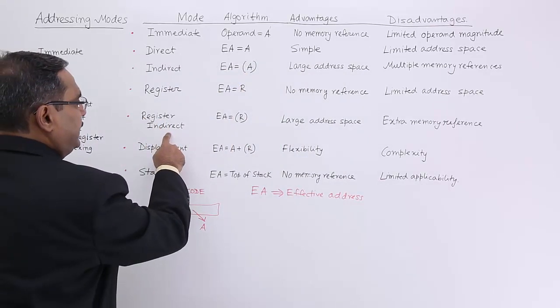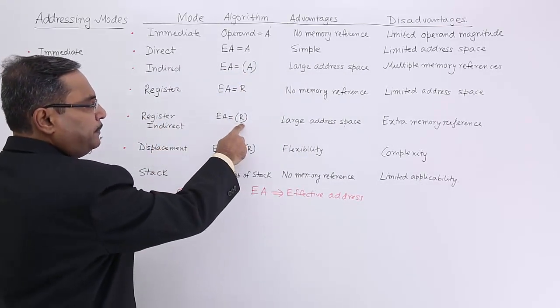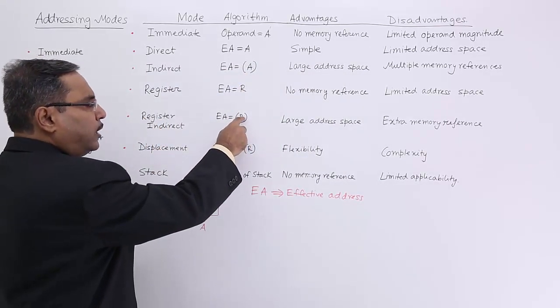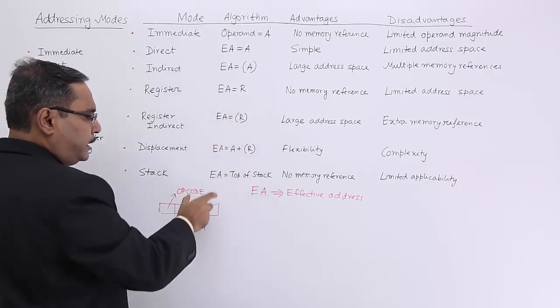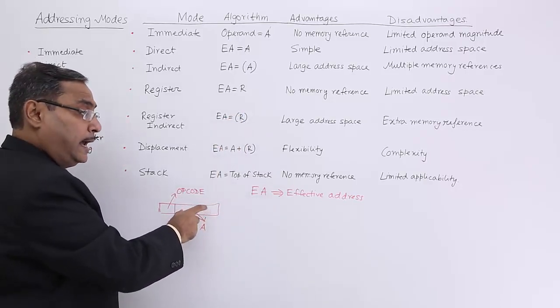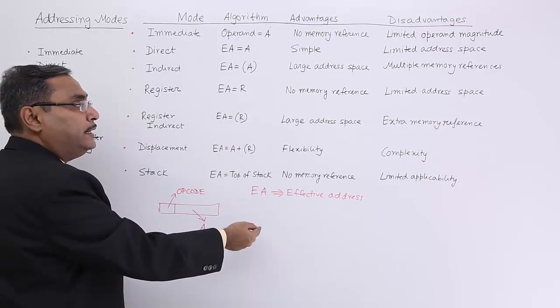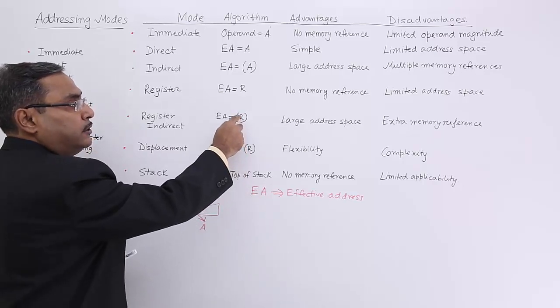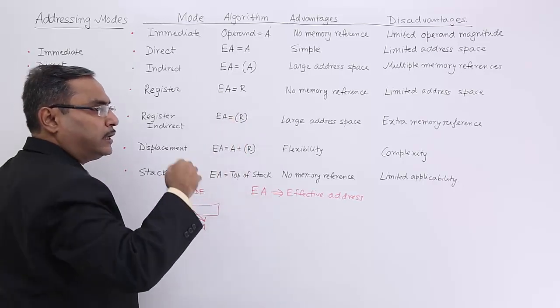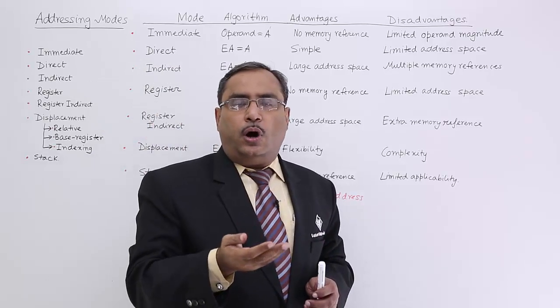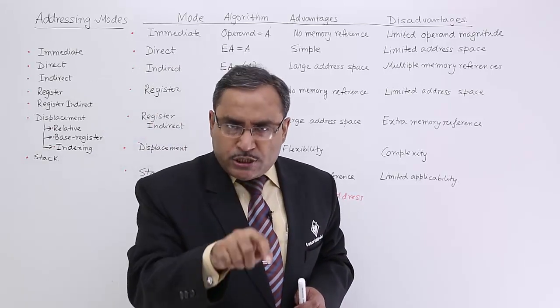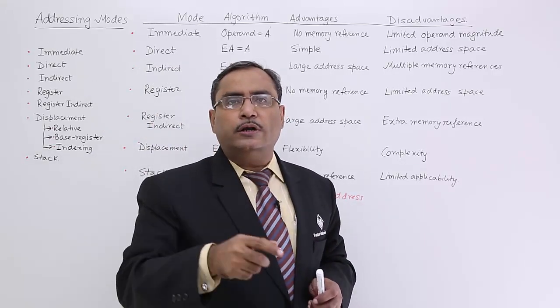We are having this register indirect. Register indirect means you are containing the content of the register. Register is containing the address of the operand and content of the address will be the data. It is actually denoting the content of the address mentioned in the register is containing operand.